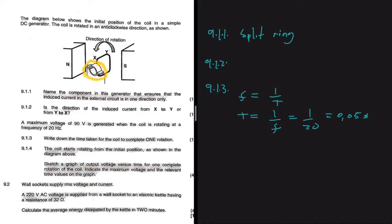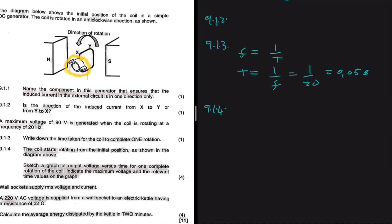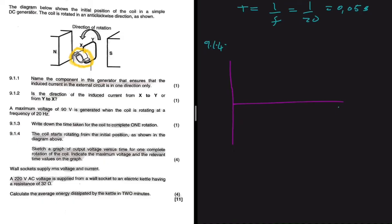Let's move to the next question 9.1.4. So 9.1.4 is saying that the coil starts rotating from the initial position as shown in the diagram above. Sketch a graph of output voltage versus time for one complete rotation of the coil. Indicate the maximum voltage and the relevant time values on the graph. So let's sketch our axis here. We have our y and we have our x. On the x we have time in seconds, and then on our y we have voltage in volts.